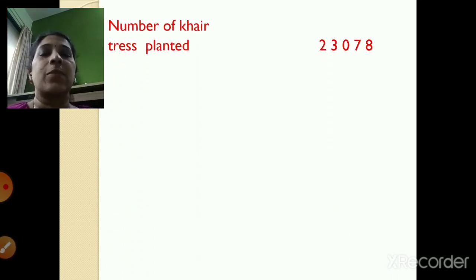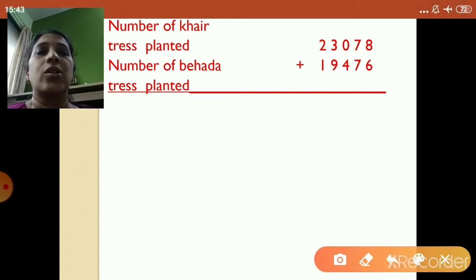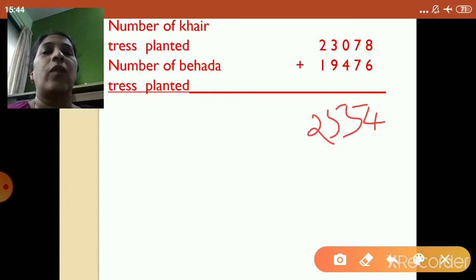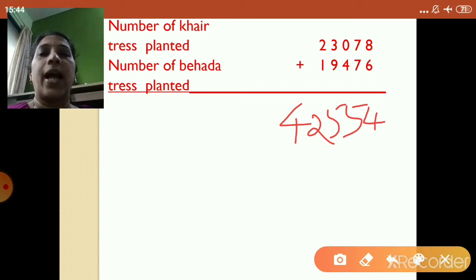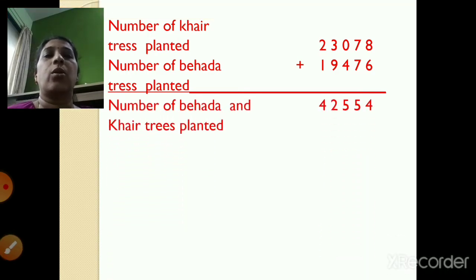Number of Kher trees planted is 23,078. Number of Behada trees planted is 19,476. So we are going to add Kher trees and Behada trees. 8 plus 6 is 14, write 4, carry 1. 1 plus 7 is 8 and 8 plus 7 is 15, write 5, carry 1. 1 plus 4 is 5. 9 plus 3 plus 9 is 12, carry 1. 2 plus 1 is 3 and 3 plus 1 is 4. So the total number of trees of Behada and Kher is 42,554.